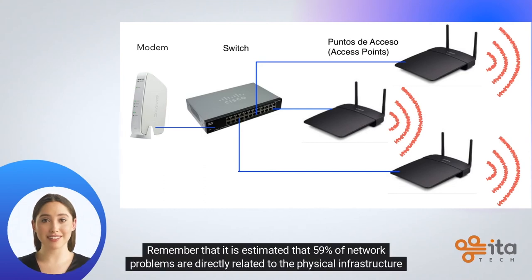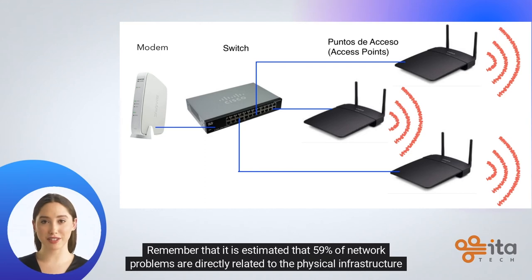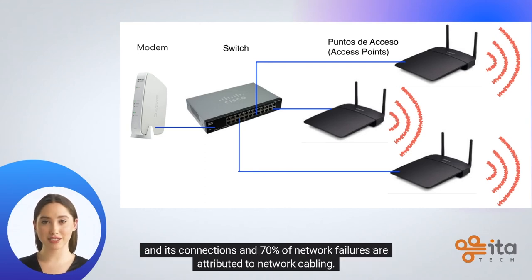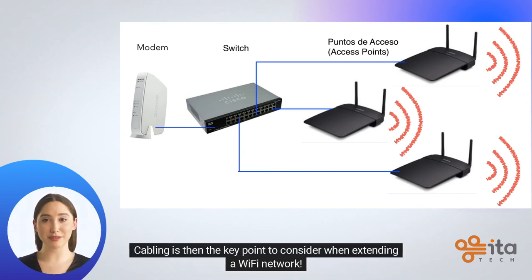Remember that it is estimated that 59% of network problems are directly related to the physical infrastructure and its connections, and 70% of network failures are attributed to network cabling. Cabling is then the key point to consider when extending a Wi-Fi network.